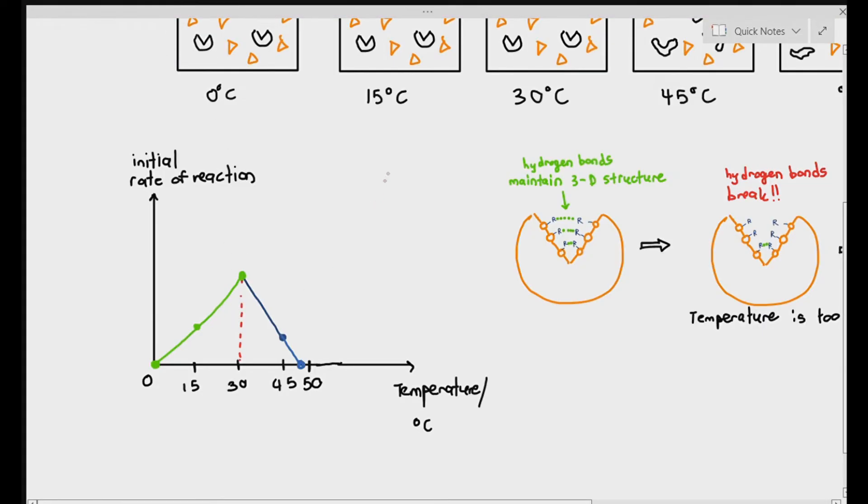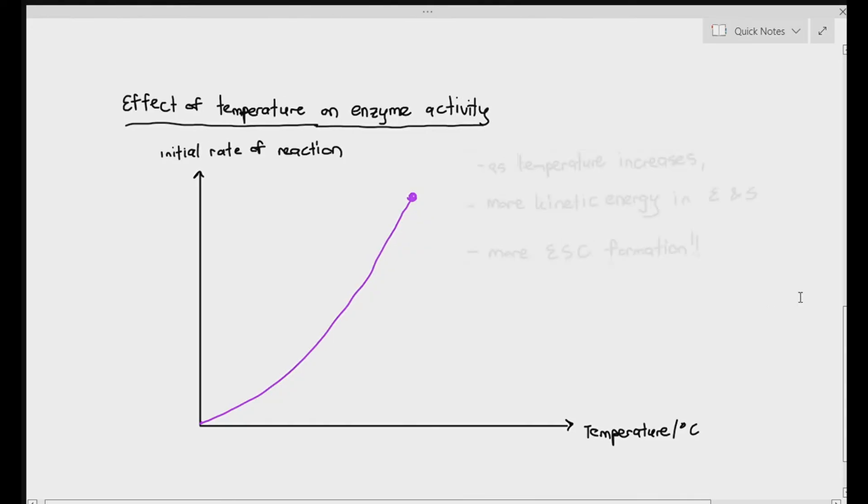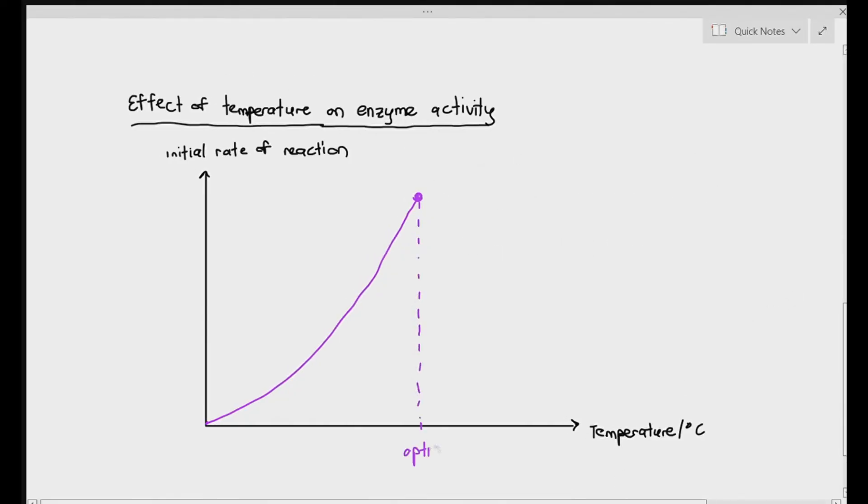Now what I want you to see here is the graph for the initial rate of reaction against temperature is not technically symmetrical. Based on my graph here, 30 degrees Celsius is the optimum temperature or the best temperature for the enzymes to function. What is very important to know is the graph is not supposed to be symmetrical when you're plotting a graph of initial rate of reaction against temperature. As temperature increases, there will be more kinetic energy between the enzymes and substrates, so more ES complex formation, so there will be a higher initial rate of reaction. At the highest point, we will refer to that as the optimum temperature.